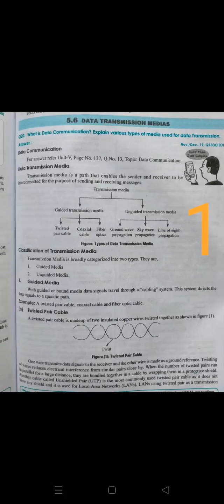Data transmission media is categorized into two types: guided transmission media and unguided transmission media. A transmission media is a path that enables the sender and receiver to be interconnected for the purpose of sending and receiving messages. If you want to send a message to another system, it needs some kind of media — that is what we are talking about.